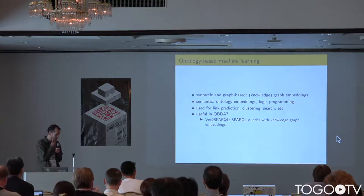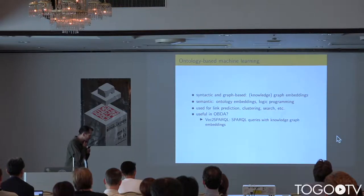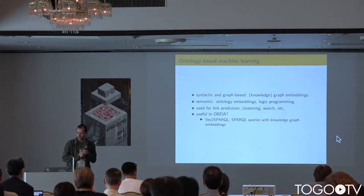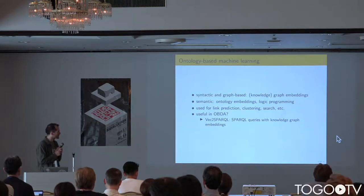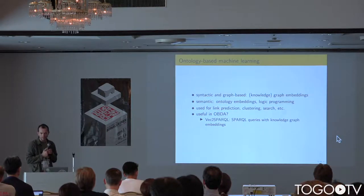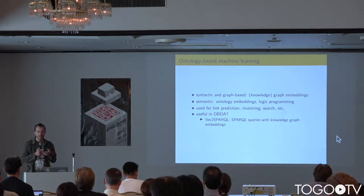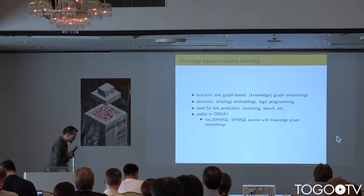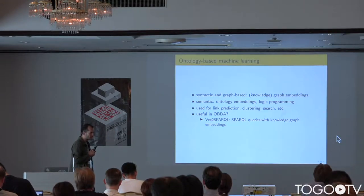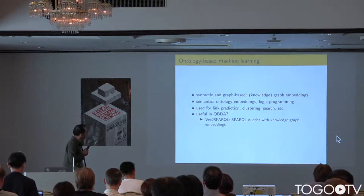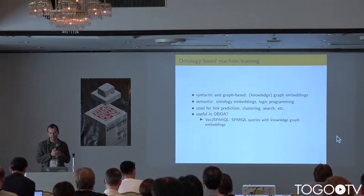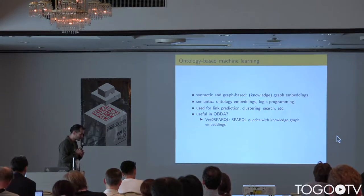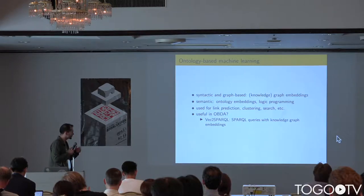And now we have machine learning. There are different approaches for embeddings — knowledge graph embeddings, ontology embeddings. We can embed logic programs. So there are a number of different machine learning methods which use semantics and the data that we deal with. We can use them for many different things. The question is how can we incorporate them in the infrastructure that we have built. One thing that comes to mind — presented last year at the hackathon — is VectToSPARQL, where we can use some kind of basic machine learning as part of SPARQL queries directly.